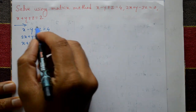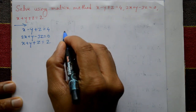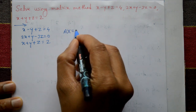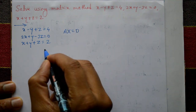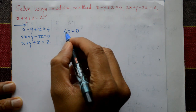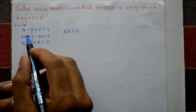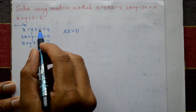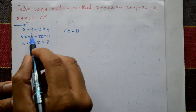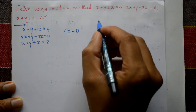Once again, write all three equations. This equation in matrix form is Ax equals D. Matrix A is formed by taking the coefficients of the x, y, z variables: 1, minus 1, 1 for the first row, 2, 1, minus 3 for the second row, and 1, 1, 1 for the third row.